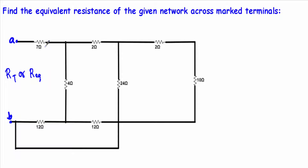In the circuit we have a 7 ohm resistor, 2 ohm resistor, 4 ohm resistor, 24 ohm resistor, 2 ohm resistor, 10 ohm resistor, 12 ohm resistor, and another 12 ohm resistor. We have to find out the total resistance between the two terminals, so we will start our simplification from the right side of the circuit.